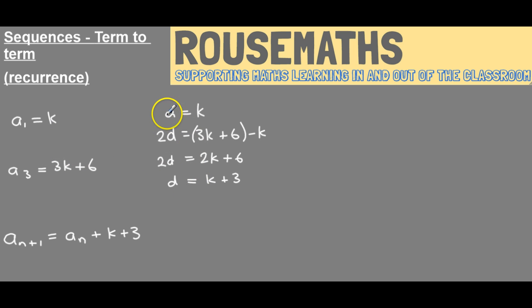And now that we've got the first term and the difference, we can start to find things out, such as if I wanted you to find out a₇, so the seventh term, I could put it into my formula, which is a plus n minus 1 d. So that would be k plus 7 minus 1 times the difference, which is k plus 3.